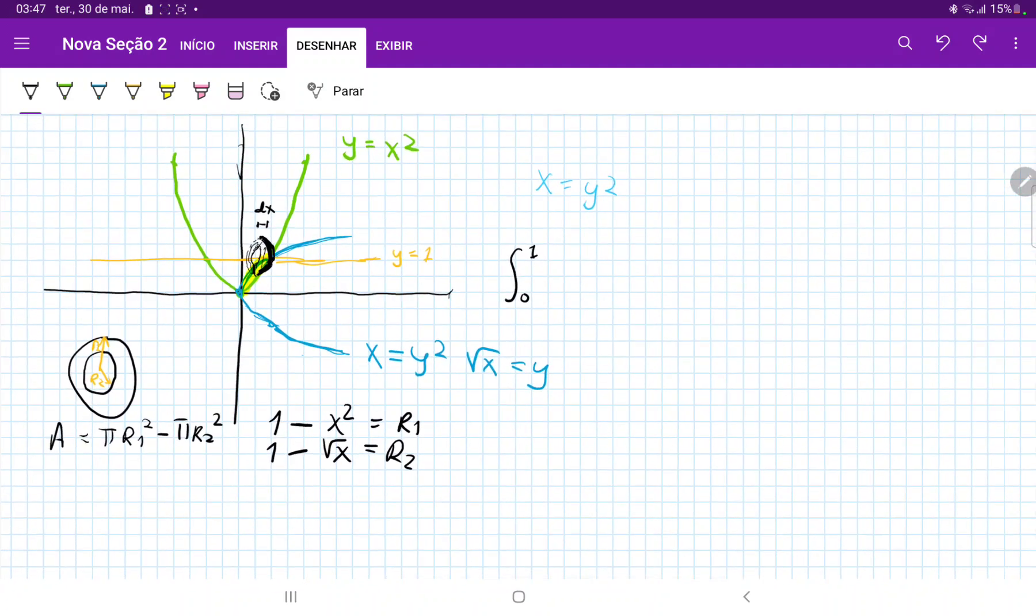we are ready to set up our integral. So our integral goes from 0 to 1 of pi r1 squared, because it is a disk, right? It is a circle, (1 - x²)², minus (1 - √x)², and then there's a pi outside, can't forget, and all of this times dx.